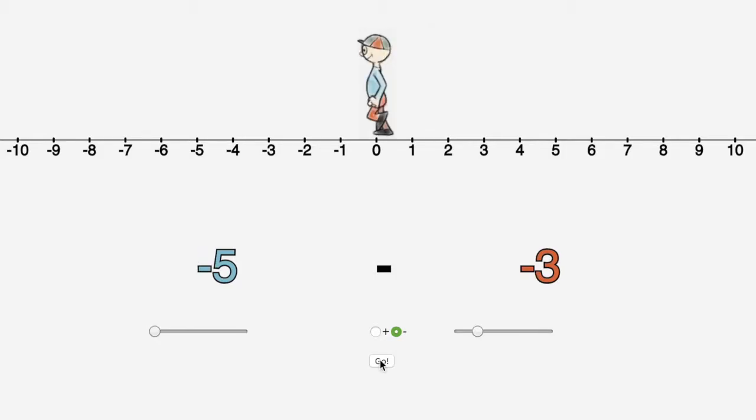Here is Stefan solving negative five subtract negative three. Again, he stays facing left for both of these as they are both negative numbers.